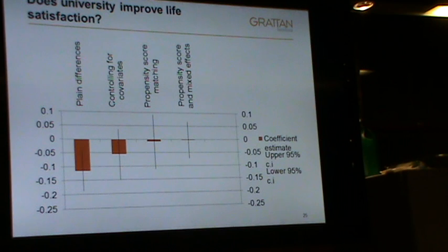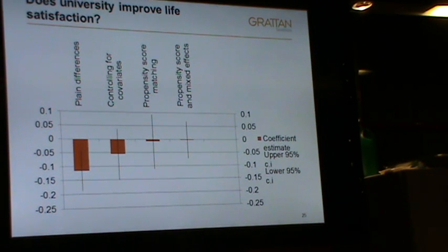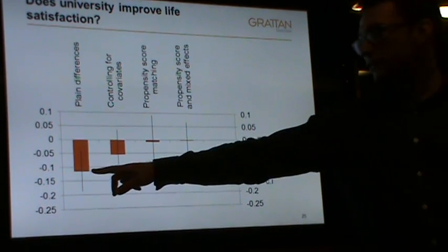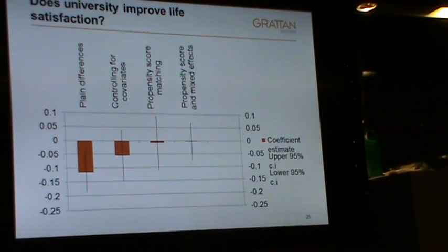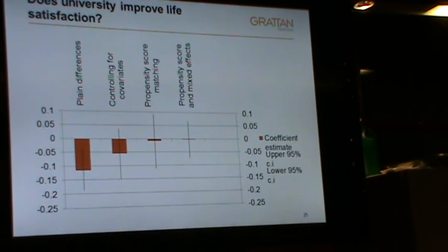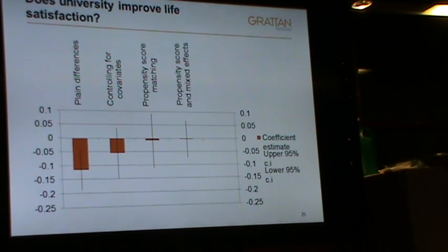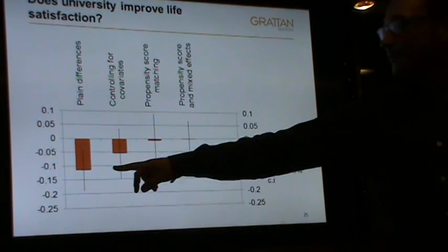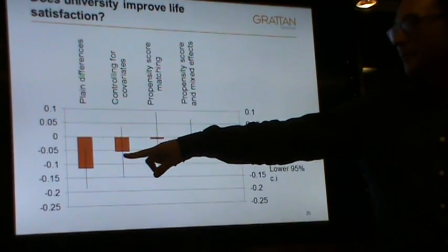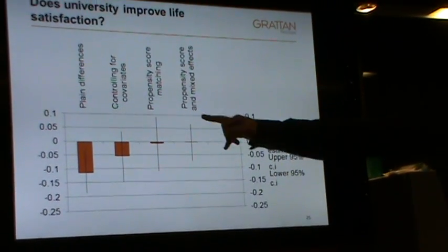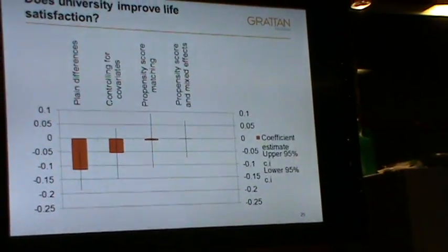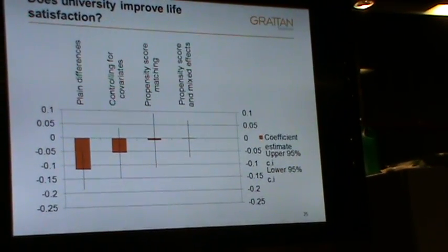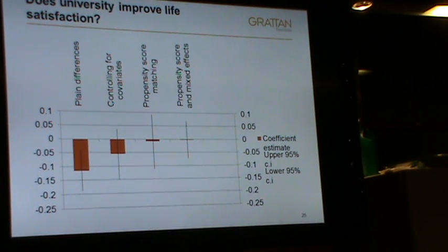If we do a straight estimate of life satisfaction in log odds on treatment, university graduates appear a little bit less happy. Anyone have theories why? Existential anxiety — everyone in the room put their hand up. If we do a straight linear regression and control for covariates, we shrink that towards zero. Once I do propensity score matching there is no difference. With mixed effects, there is even less difference. So ignorance is bliss — people who don't have that extra knowledge are happy.